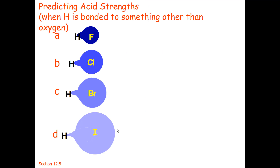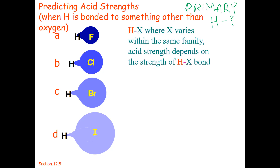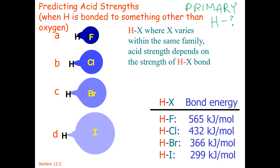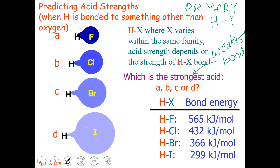So how can we predict acid strengths when we don't have any information from our acid-base table? We're going to start with what I call a primary effect. In a primary effect, the hydrogen is bonded directly to what we are changing. Here's an example — we have hydrofluoric acid on top and hydroiodic acid at the bottom, so this is HX where X varies within the same family or group. Our acid strength is going to depend upon the strength of the HX bond. Here are the bond enthalpies for H bonded to different halogens, and we want to know which is the strongest acid. The strongest acid has the weakest bond.